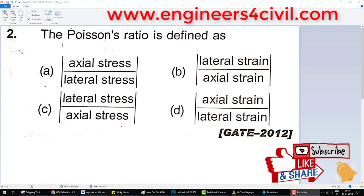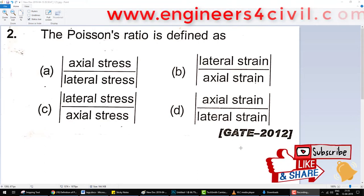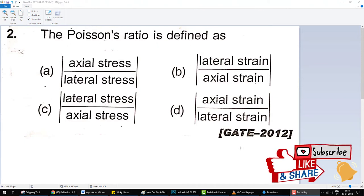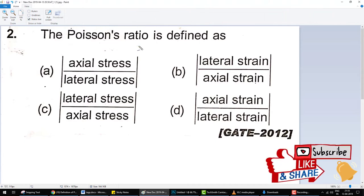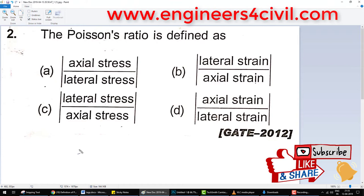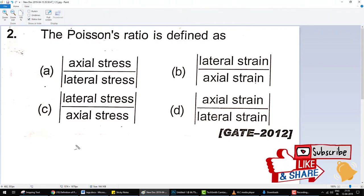Hello everyone, this question asking in GATE Civil Engineering 2012. The question is: Poisson's ratio is defined as? We have four options. What is Poisson ratio? Poisson ratio is the negative ratio of lateral strain and the longitudinal strain.